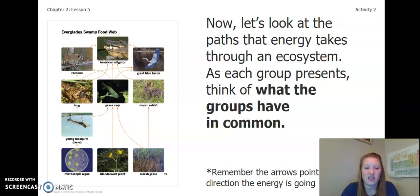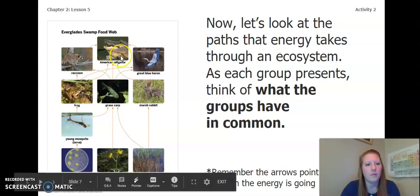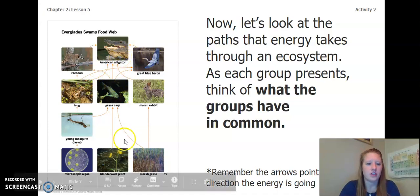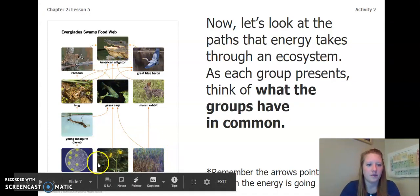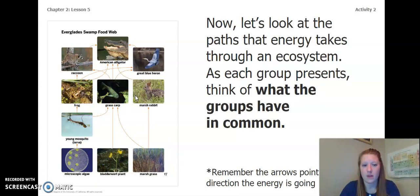So one thing I notice that they have in common is that the alligator seems to be the top, which it is the top predator of this food web. Another thing that I notice is that all the energy is going up in this diagram and starts at some type of plant. And then it goes through a herbivore. And then after it goes through the herbivore, it goes into an omnivore or a carnivore. And it ends at a carnivore. Did you notice anything else?